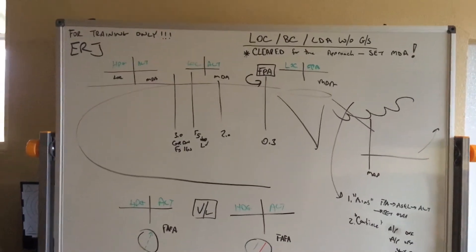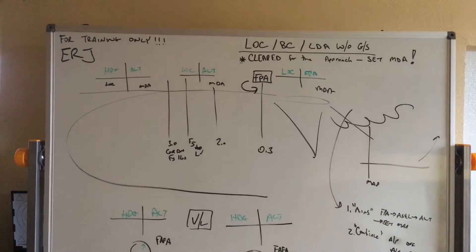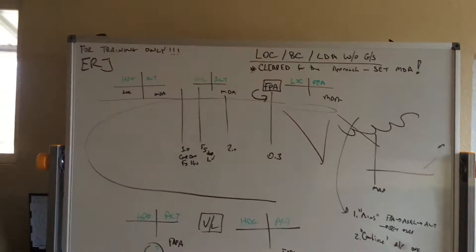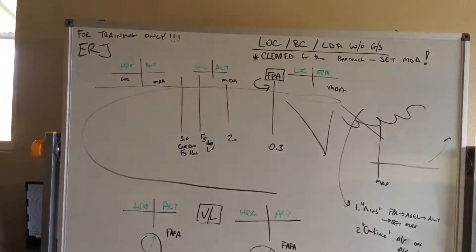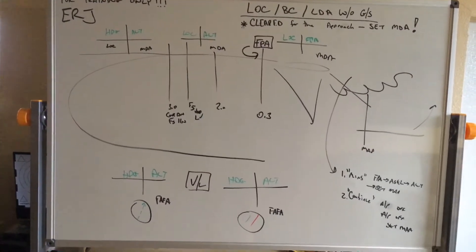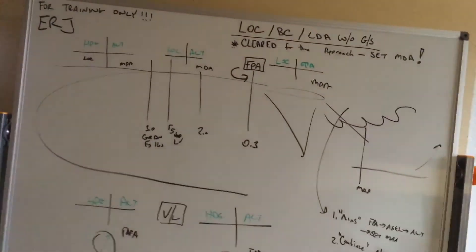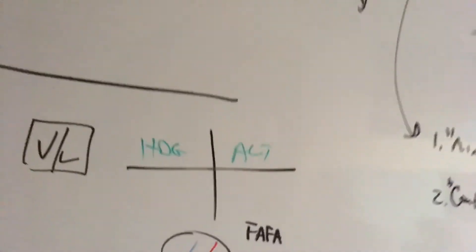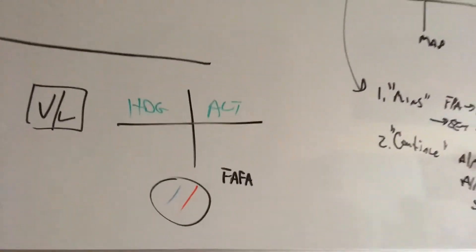Let's take a look at what's different when you're at the final approach fix altitude already. Let's say you're getting vectored around, you're at an altitude in green, and you have your preview selected.